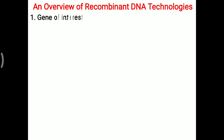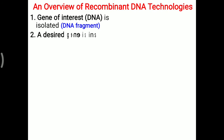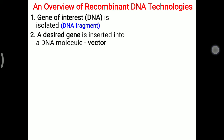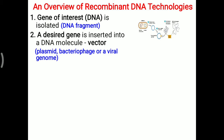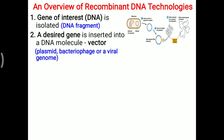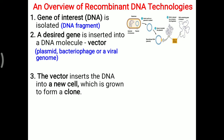An overview of recombinant DNA technology: first, a gene of interest is isolated — a particular DNA fragment is isolated. Once isolated, the desired gene is inserted into a DNA molecule obtained from a vector. That vector transports the desired gene to a particular location. The vector molecule is mostly a plasmid, bacteriophage, viral genome, or cosmid. From the chromosome, the particular desired gene is separated and inserted into a vector.